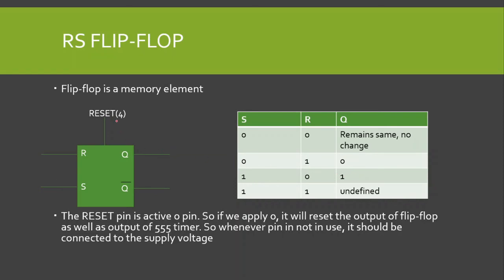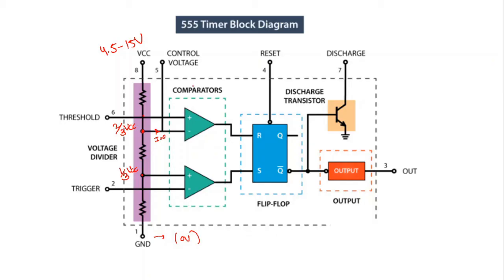There is also a reset-for pin (pin 4), which is an active-low pin. If we apply 0 here it will reset the output of the flip-flop as well as the output of the 555 timer. So whenever this pin is not used, it should be connected to the supply voltage. The output of the flip-flop and the output of the 555 timer are the same.